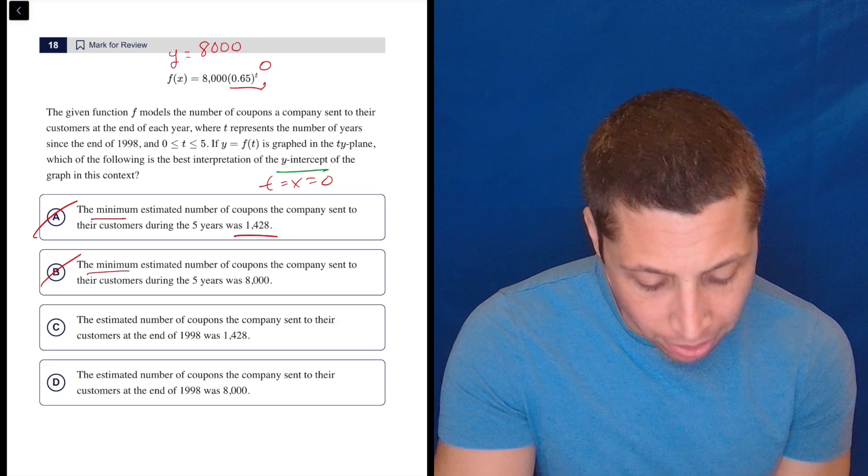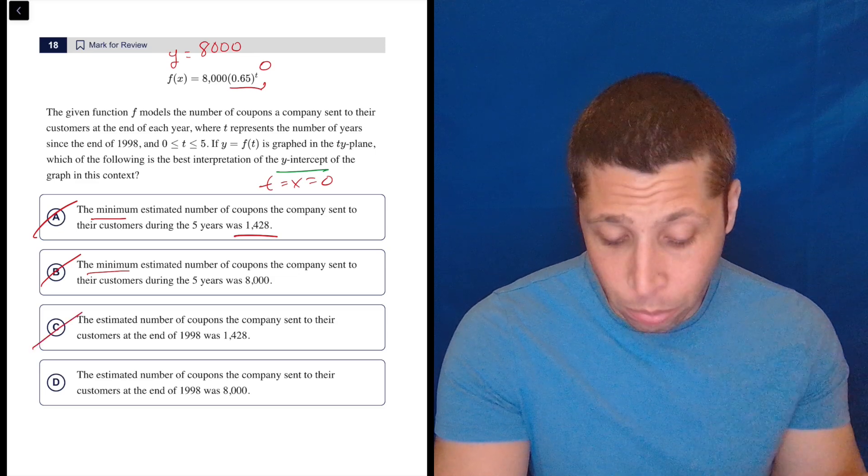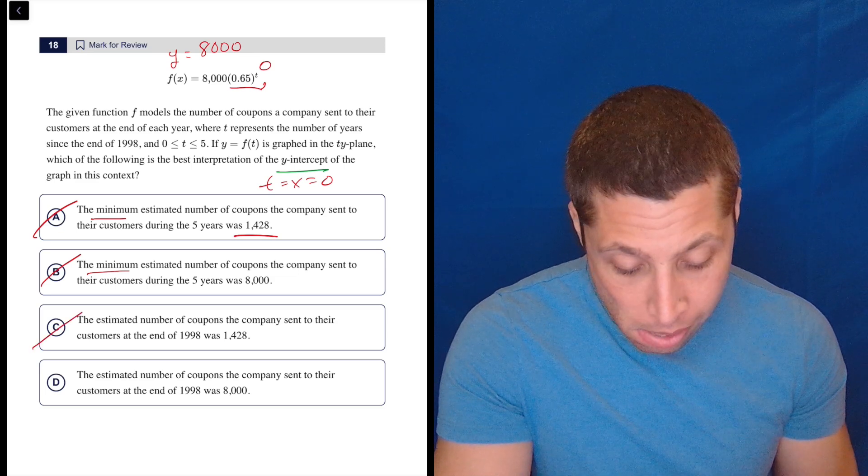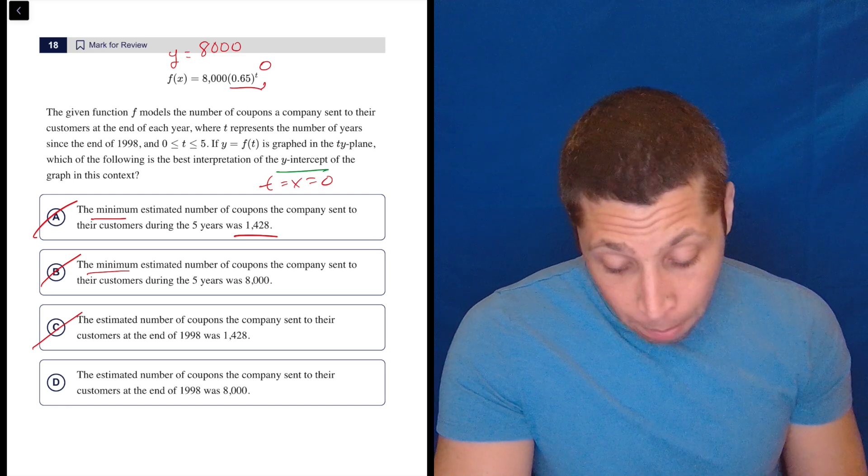C, the estimated number of coupons the company sent to their customers at the end of 1988 was 1,428. Again, I don't know where that number is coming from. I'm assuming it's like, I don't even know, 0.35. I think it's 8,000. I have no clue.